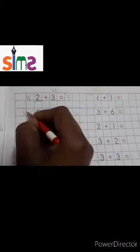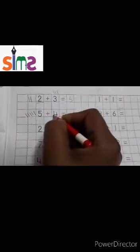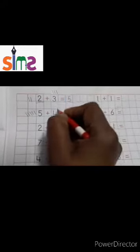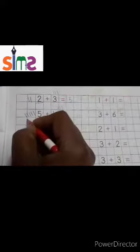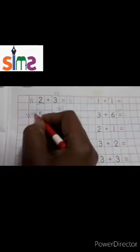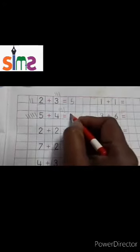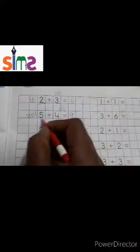Next number is five — five lines: one, two, three, four, five. Four number — four lines: one, two, three, four. Count all the lines: one, two, three, four, five, six, seven, eight, nine. So five plus four is equal to nine.